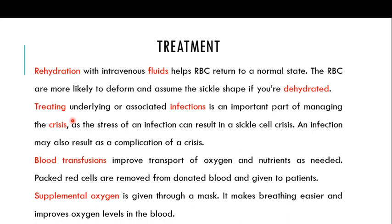Treating underlying or associated infections is also really important for managing the crisis, as the stress of an infection can result in a sickle cell crisis. An infection may also result as a complication of a crisis. Patients with sickle cell anemia who are infected should be treated on a priority basis with antibiotics or other medicines as prescribed.